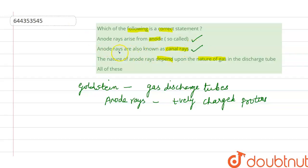Anode rays are also known as canal rays. This is correct because in the gas discharge tube, an experiment was conducted using a perforated cathode. These anode rays pass through the perforated cathode, that's why it was called as canal rays.